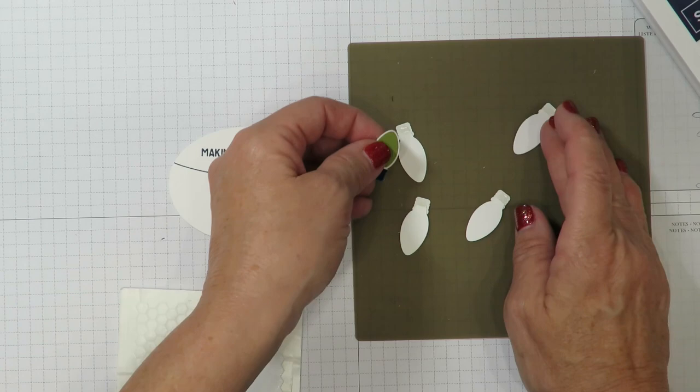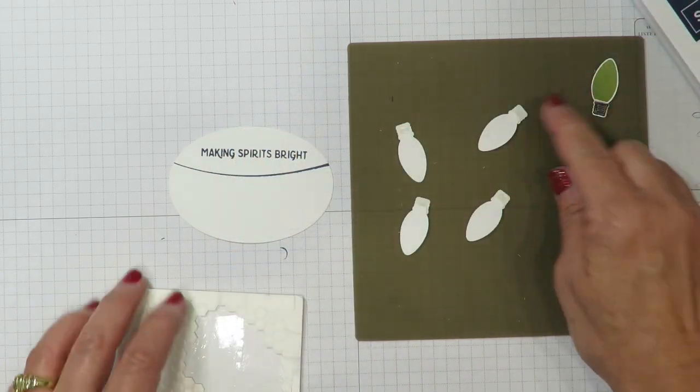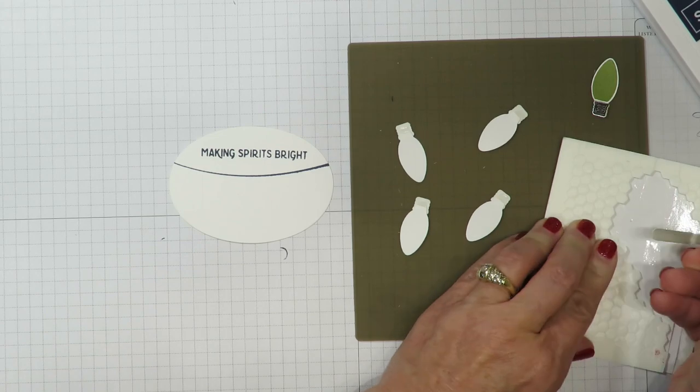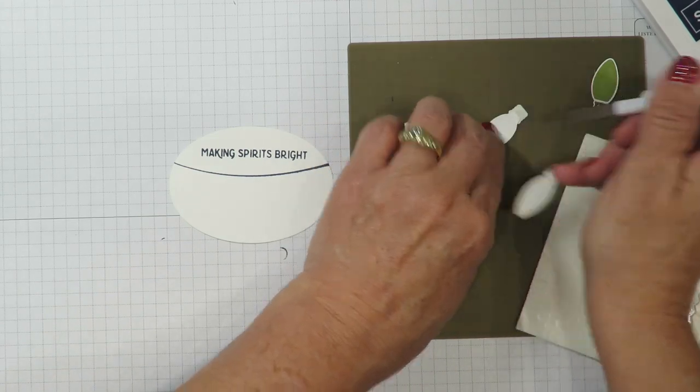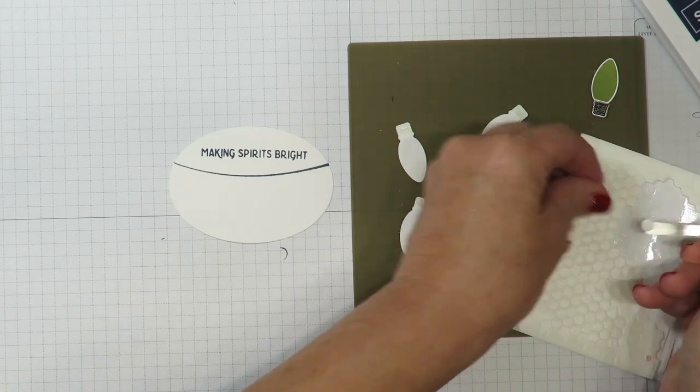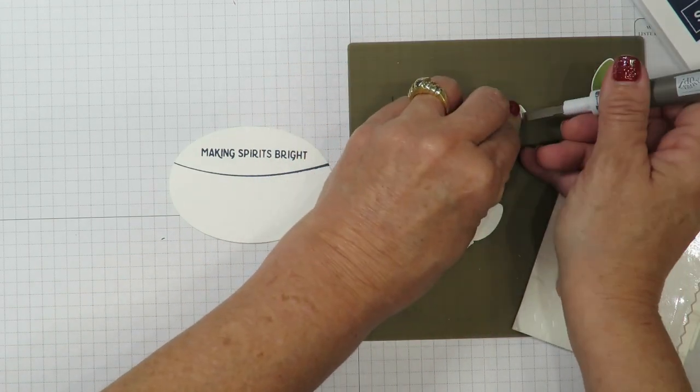Once those are adhered, I'm going to flip those over and I'm going to add mini dimensionals to the back of all of these except for one green one. I'm going to leave that to the side and we're going to use that on our pop-up. So here I've got my mini dimensionals. I'll place one at the top and one at the bottom of each of those light bulbs.